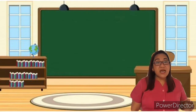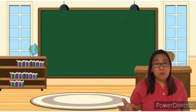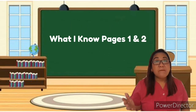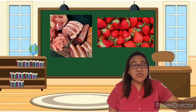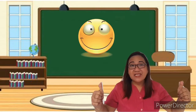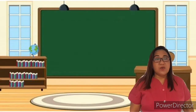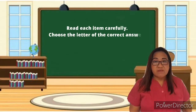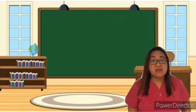Before we begin, let's try to answer the following questions. Children, follow me while holding your modules. In your modules you can see this part — in 'What I Know,' pages one and two. Let's try to check your favorites. I'll show you pictures — show me a thumbs up if you like the product, thumbs down if you don't. Read these items carefully and choose the letter of the correct answer. Write your answer on a separate sheet of paper.